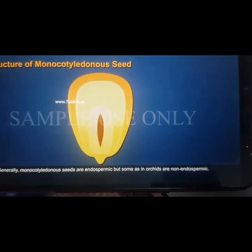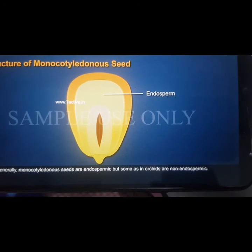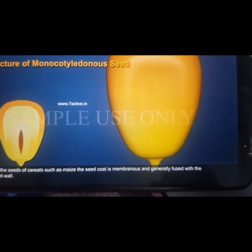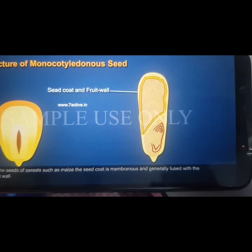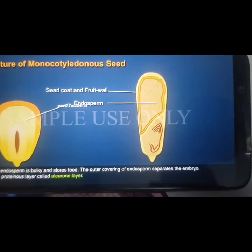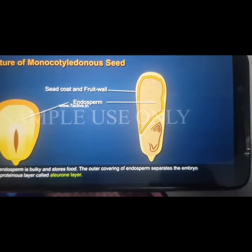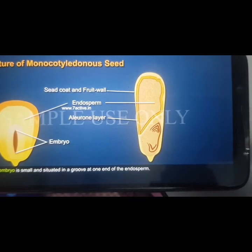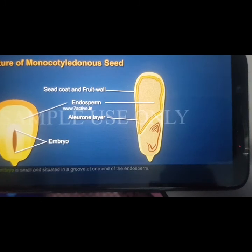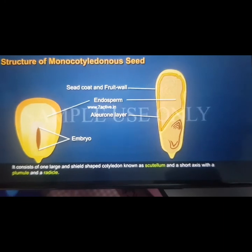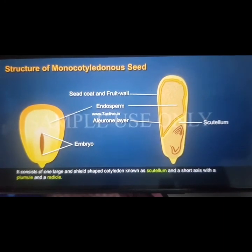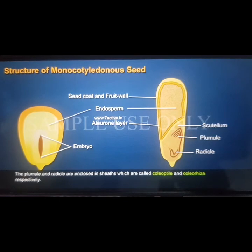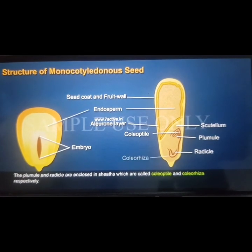Generally monocotyledonous seeds are endospermic, but some such as orchids are non-endospermic. In seeds of cereals such as maize, the seed coat is membranous and generally fused with the fruit wall. The endosperm is bulky and stores food. The outer covering of endosperm separates the embryo by a proteinous layer called aleurone layer. The embryo is small and situated in a groove at one end of the endosperm. It consists of one large shield-shaped cotyledon known as scutellum, and a short axis with a plumule and a radicle. The plumule and radicle are enclosed in sheaths called coleoptile and coleorhiza respectively.